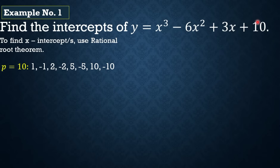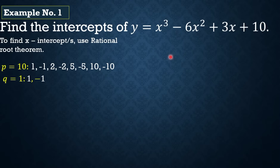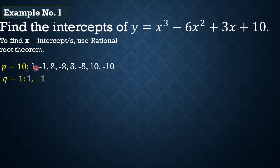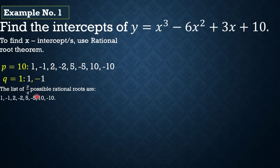First, kunin natin yung possible factors ng constant term natin — yung positive and negative numbers na factor nitong 10. So ang factors ng 10 ay: ±1, ±2, ±5, and ±10. And then kunin din natin yung factors ng leading coefficient. Since ito yung leading term at naka-standard form na, yung leading coefficient natin is 1, so ang possible factors nito ay 1 and negative 1. After makuha natin yung factors ng constant term and leading coefficient, kunin natin ngayon yung possible rational roots.